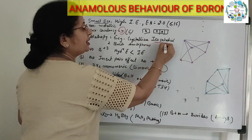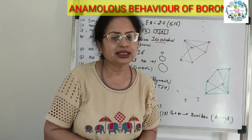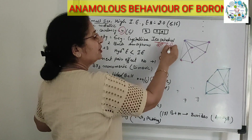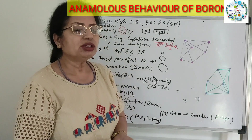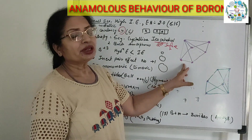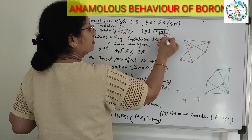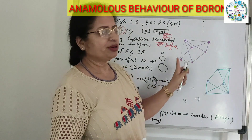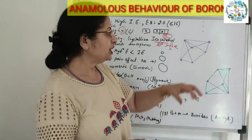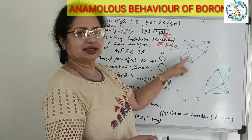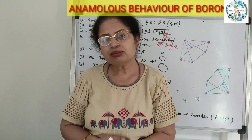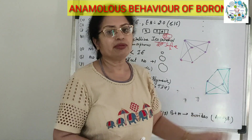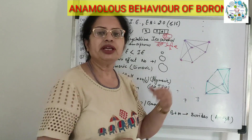The icosahedral form has 20 surfaces — 'icosa' means 20 and 'hedra' means surface, so it has 20 triangular surfaces. To draw this structure we need a total of 12 boron atoms. We start by making a pentagon with 5 corners, forming a pyramid structure. This is how the icosahedral structure is formed: you place 5 atoms on top in a pentagonal arrangement.